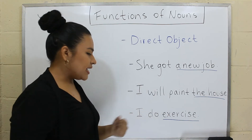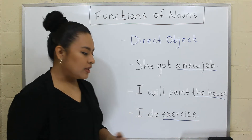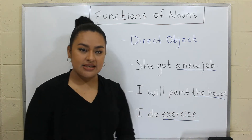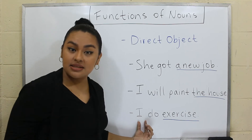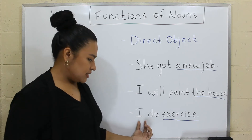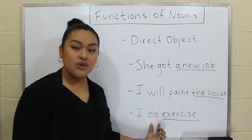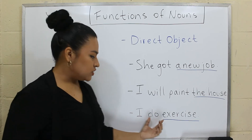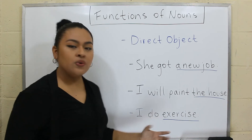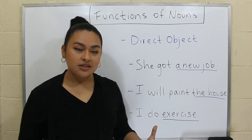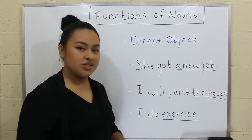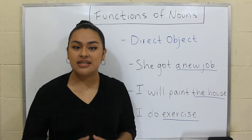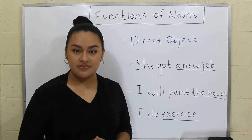And in the last example: I do exercise. I is the subject of the sentence. Do is the verb. So I do what? Exercise. So exercise is the direct object.